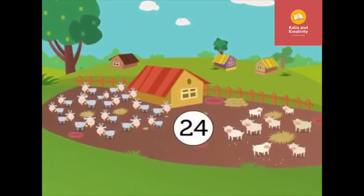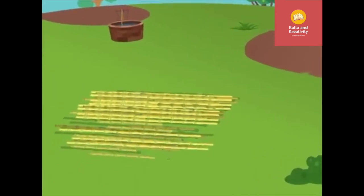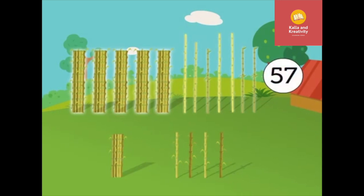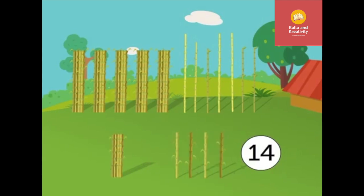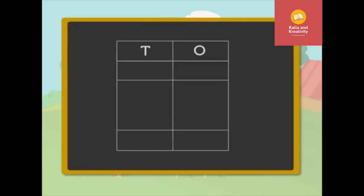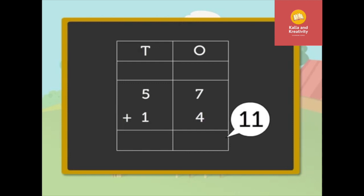Look, there are twenty-four animals in all. Look at the juicy sugar canes. Some are big and some are small. There are fifty-seven big sugar canes and fourteen small sugar canes. Let's see how many sugar canes there are in all. Here we have to add fifty-seven and fourteen. Add the ones, that is, seven plus four is equal to eleven. Carry one-ten to the tens column and write one in the ones column.